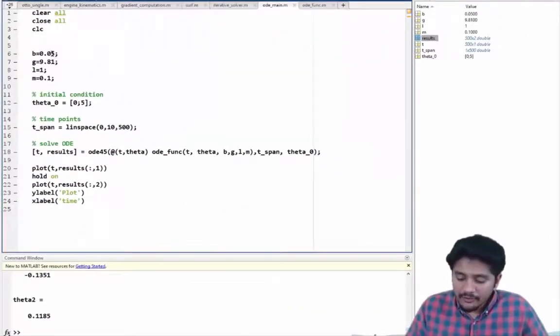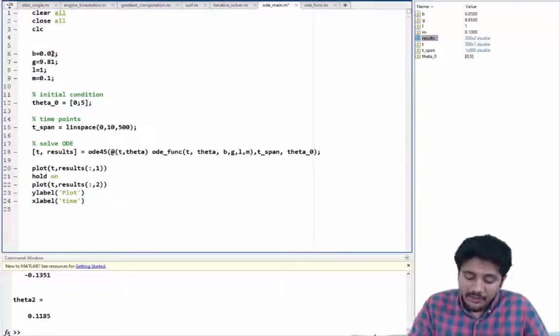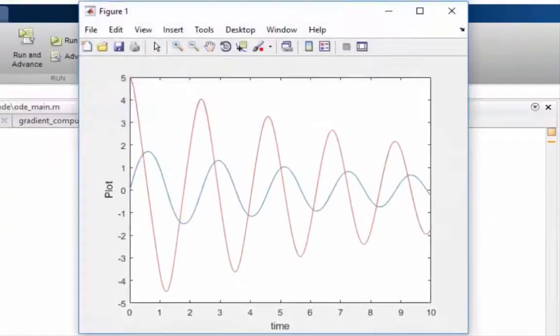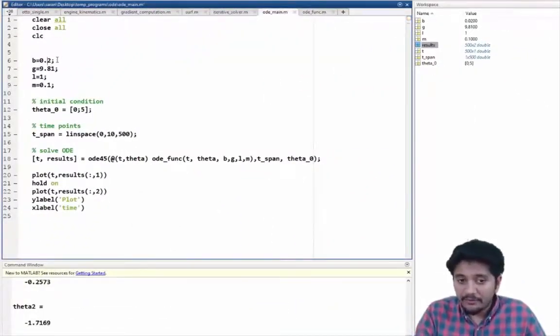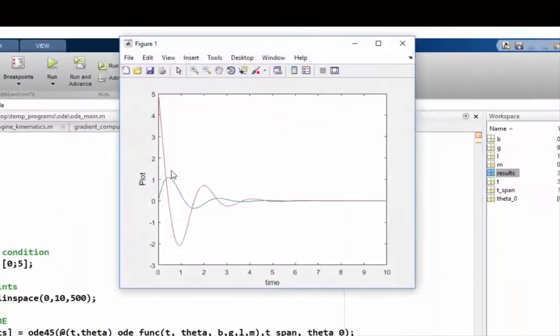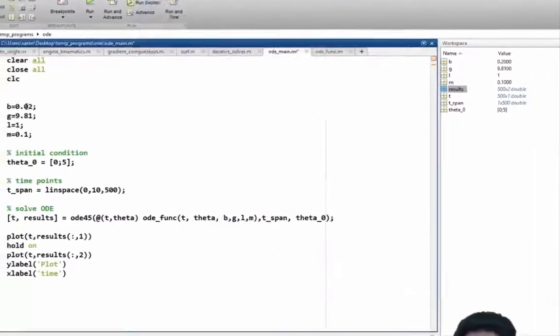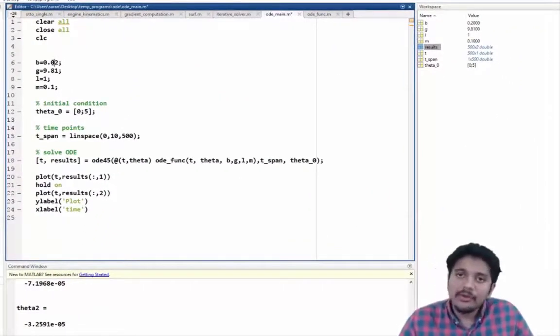So once you have this baseline code you can just keep changing your parameters. For example, I am going to change my damping coefficient and you can see that the oscillations are not being damped that much. I can also increase it by a factor of 10 and I can damp out the vibrations very quickly. So you can see that we have written a very useful code. You can solve any second order ODEs that you want and you can apply the same concepts to solve higher order ODEs as well.